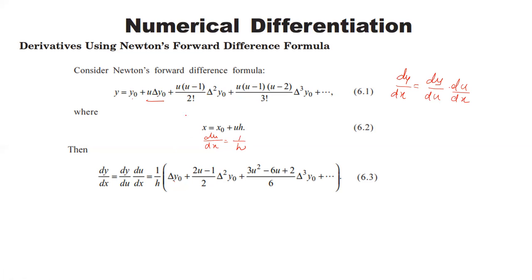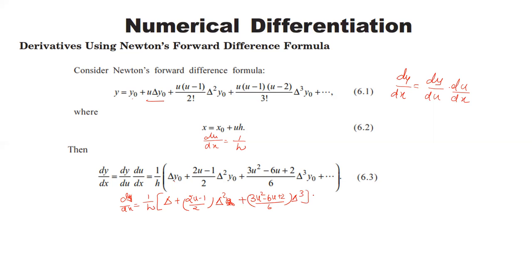Simplifying, we get the term (2u−1)/2 · Δ²y0. Taking y0 out, dy/dx equals (1/h) times [Δ + (2u−1)/2 · Δ² · y0], plus (3u²−6u+2)/6 · Δ³y0.